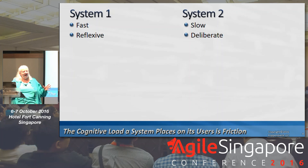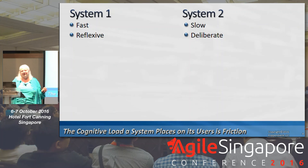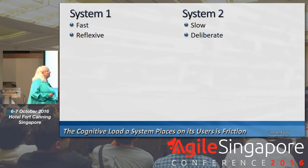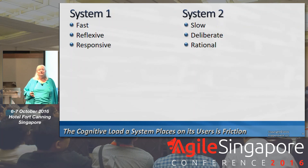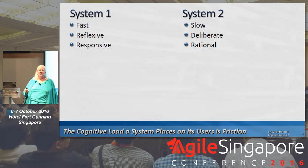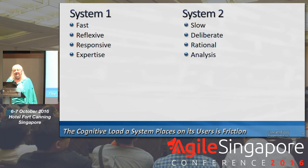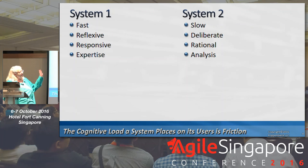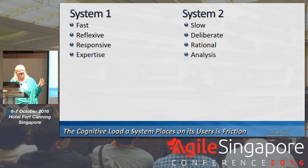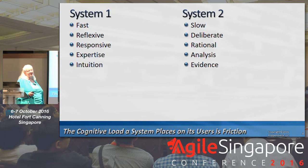System 1 is reflexive — if I touch something hot, I pull my hand away right away. System 2 is slow and deliberate. System 1 is very responsive to whatever happens, and System 2 is rational — I think through all the ramifications before I make a decision. System 1 is all about expertise; experts are operating off System 1. And System 2 is about analysis. There's probably a place for both expertise and analysis. System 1 is about intuition, System 2 is about evidence.